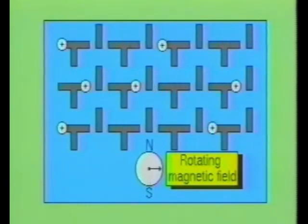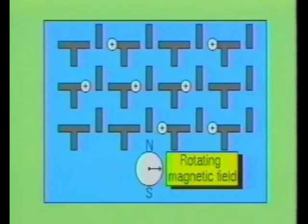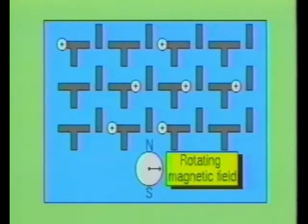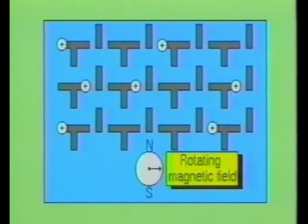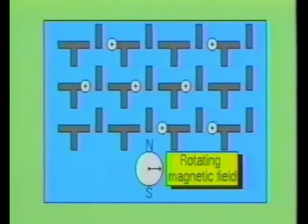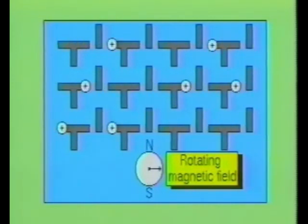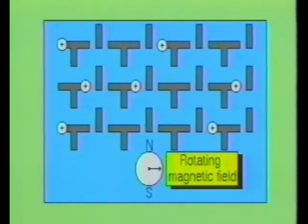Each time the field makes one complete revolution, all the bubbles will have advanced one step. This type of memory works like a shift register, whose shifting frequency is determined by the frequency of the rotating magnetic field. Bubbles can be moved at the rate of 10 million steps per second.